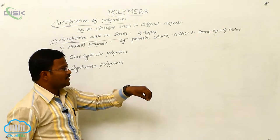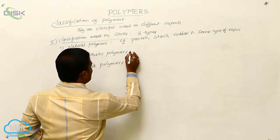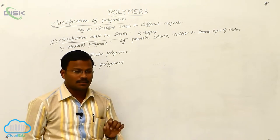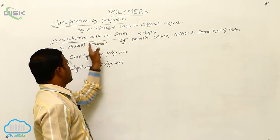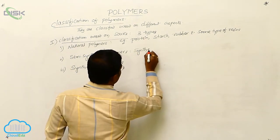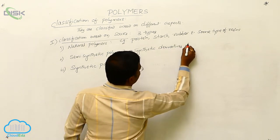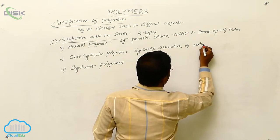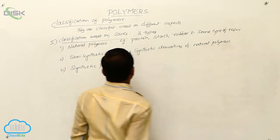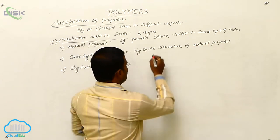The polymers which are present in animal or plant bodies are called natural polymers. Whereas semi-synthetic polymers are nothing but synthetic derivatives of natural polymers. So semi-synthetic polymers are synthetic derivatives of natural polymers.